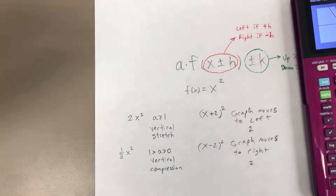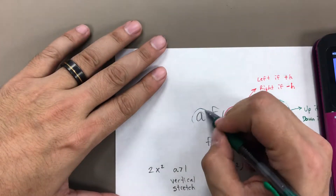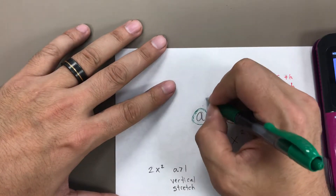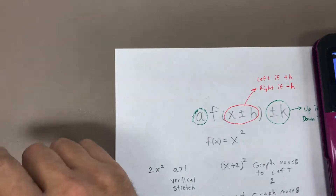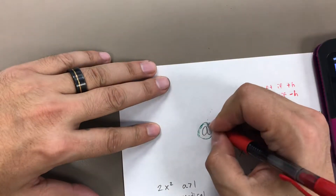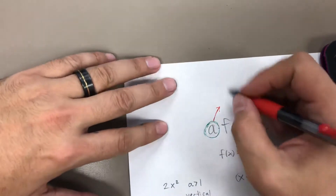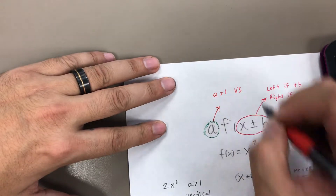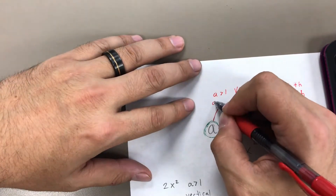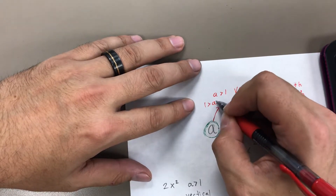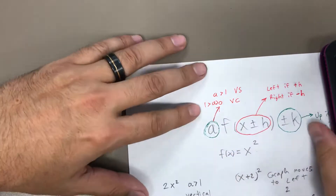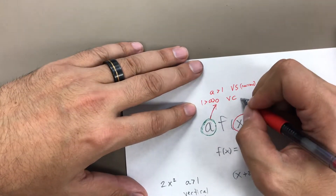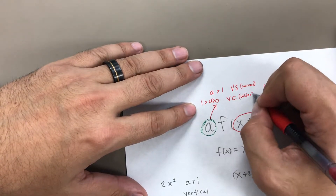So this A value has a couple of rules. When A is greater than 1, we have a vertical stretch. When A is between 0 and 1, we have a vertical compression. Remember that vertical stretch means the graph gets more narrow, and vertical compression means it gets wider.